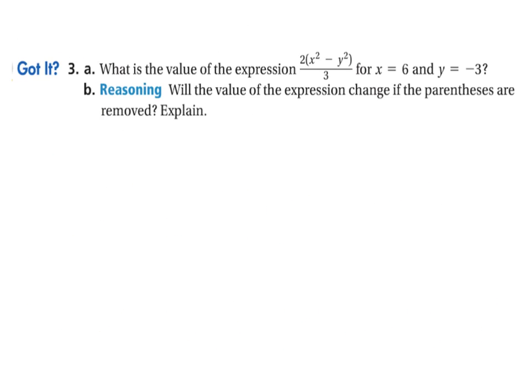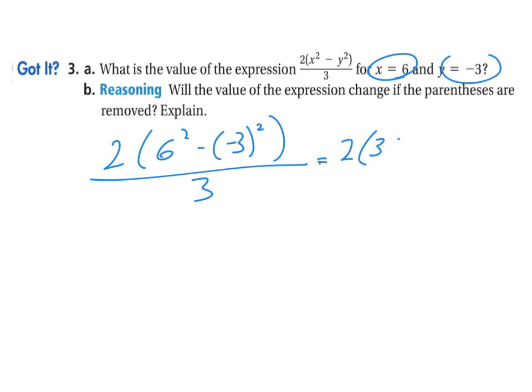Same sort of question. We've got the expression, we want to plug in the values for x and for y. So we plug in the 6 for the x, and then the negative 3 for the y. We work inside the parentheses first, and inside the parentheses we have a couple of exponents, so we can do those at the same time. So we'd square the 6 and get 36, square the negative 3 and get a positive 9. So you have to be careful there.